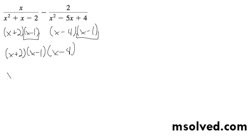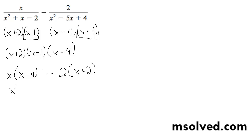On the top left we're going to get x times the quantity x minus 4, minus 2 times the quantity x plus 2. Here we have the x minus 1 and the x minus 4 accounted for. So this becomes x squared minus 4x minus 2x minus 4.